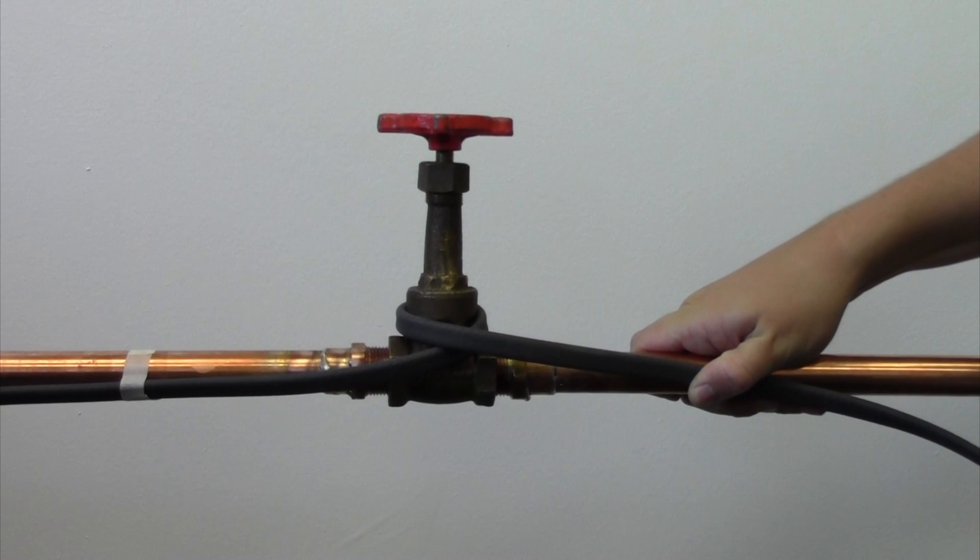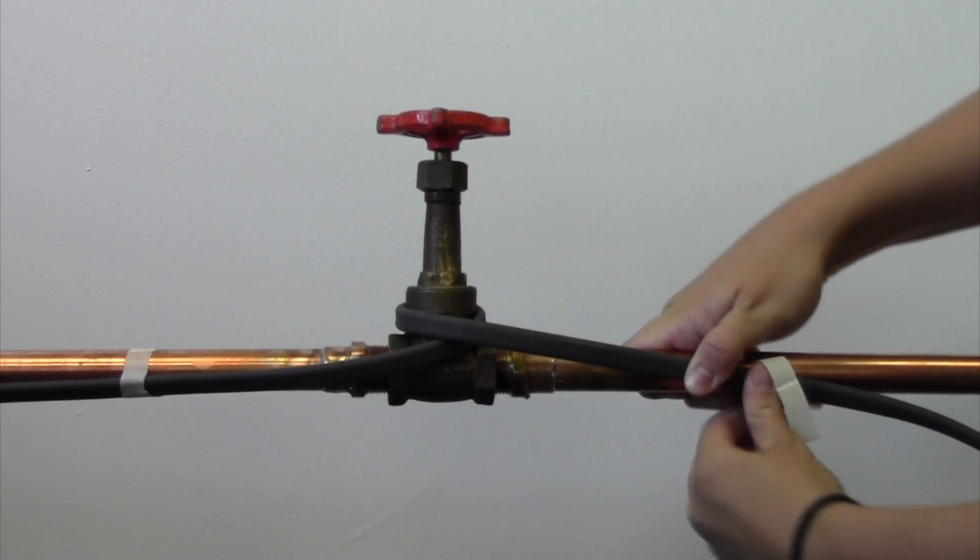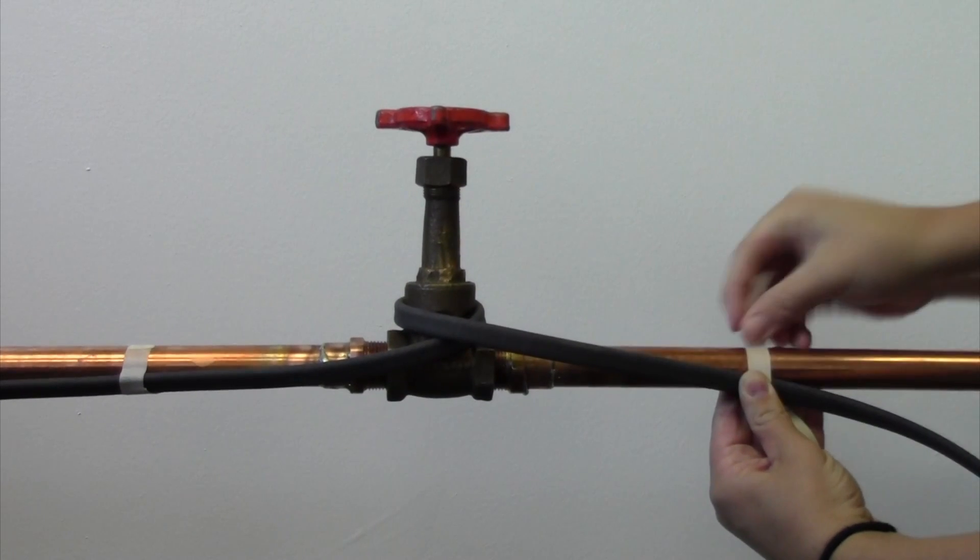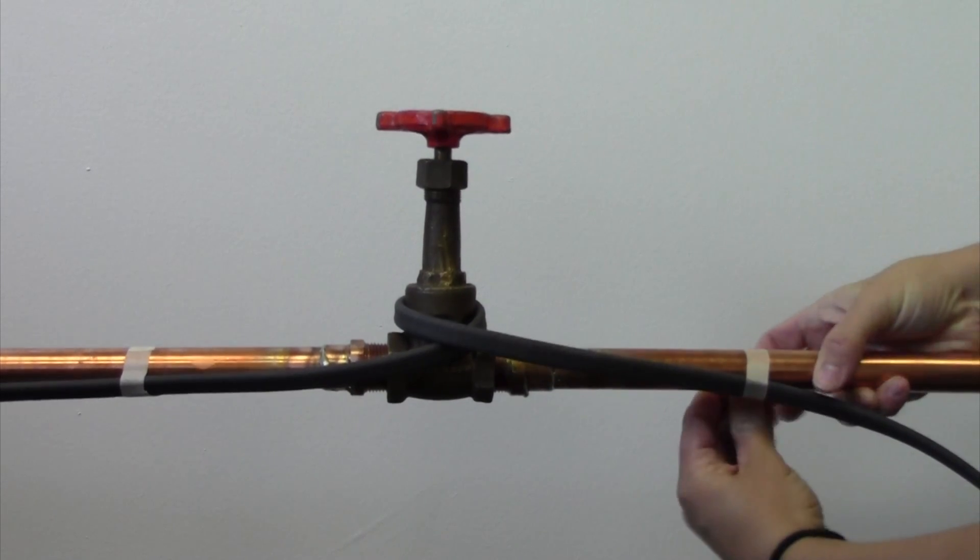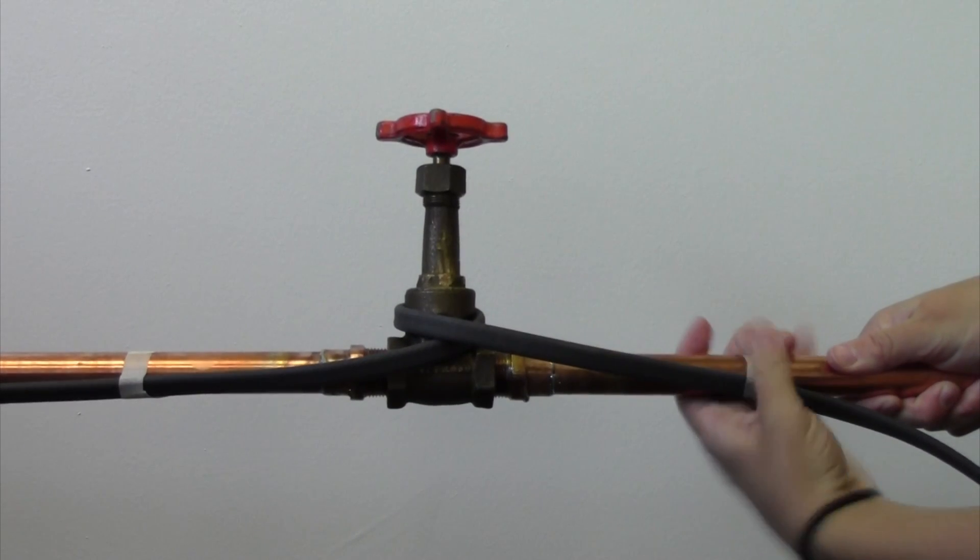After the cable is wrapped around the valve, secure it with a couple pieces of fiberglass adhesive tape and continue installing it with either a straight line or spiral wrap installation.